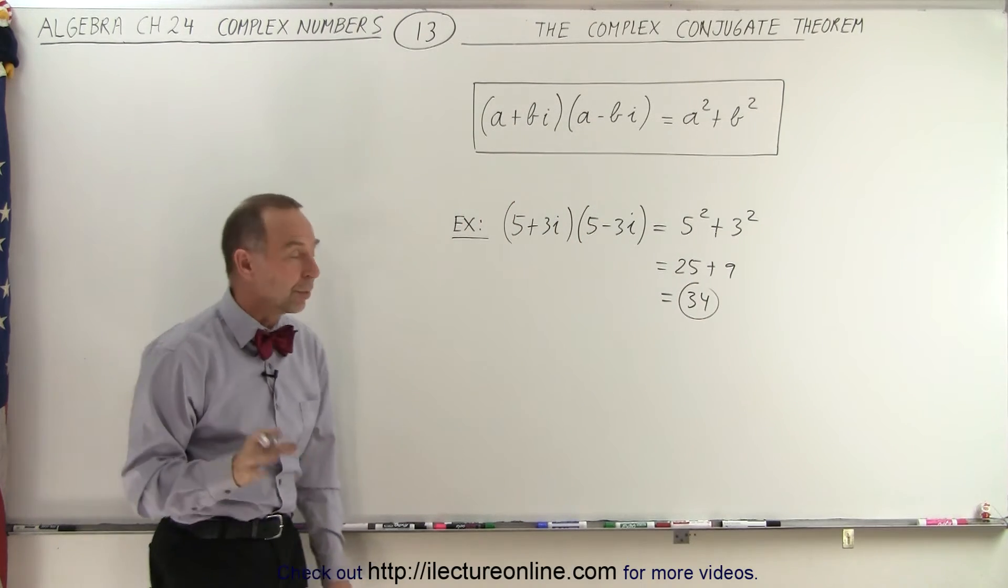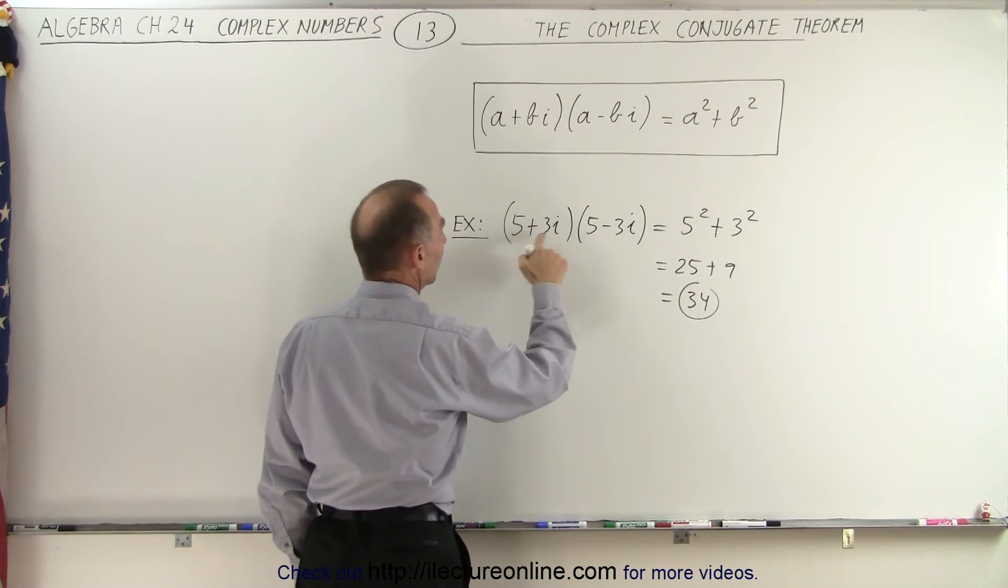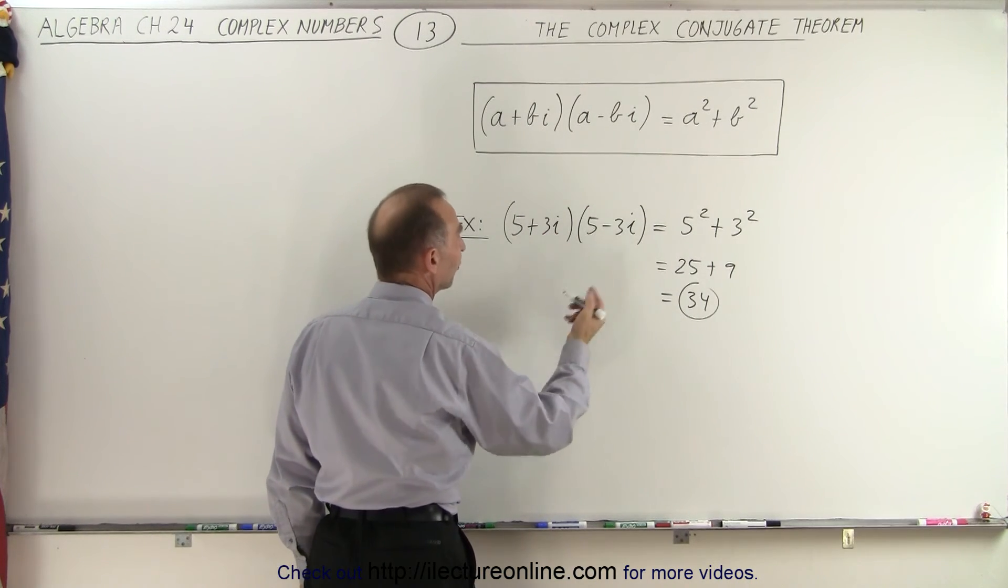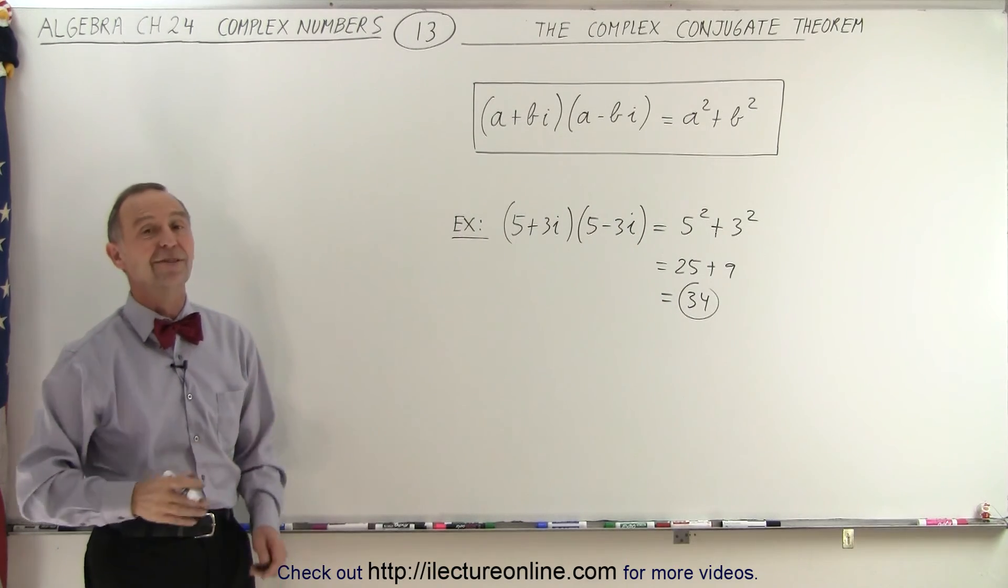So that's how simply we can multiply a complex number by its conjugate. You can simply say it's 25 plus 9, which is 34, and you don't even have to go to that if you can see the numbers right away. And that is how it's done.